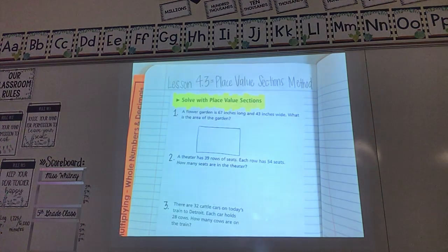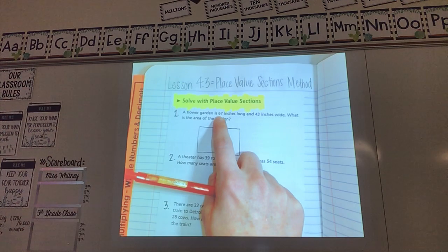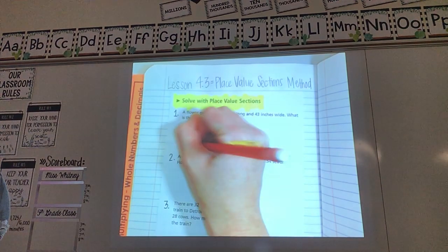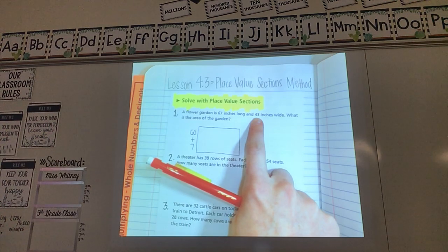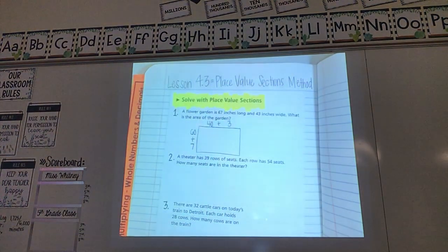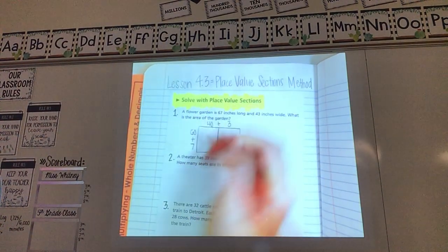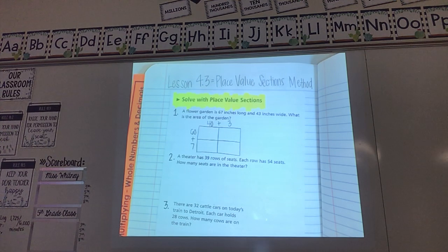And find that first number which is 67 and we have to break that apart. When I break 67 apart it becomes 60 plus 7 and then I want to break my other number apart. So 43 when I break that apart it becomes 40 plus 3. Is it looking more familiar to you hopefully? Then at my plus signs remember I'm going to draw a line. So on each of my plus signs and then I have to solve each part of this box.